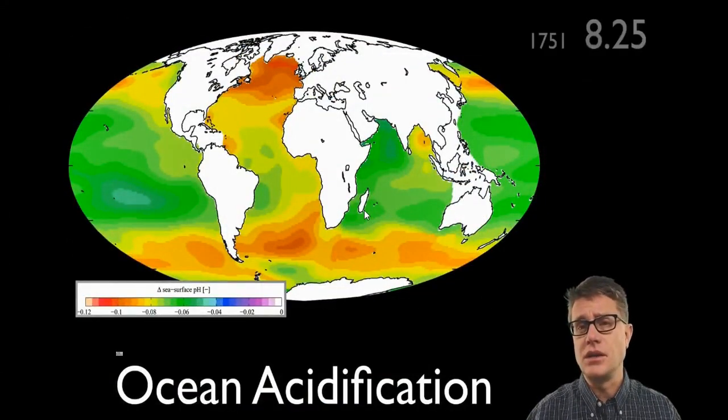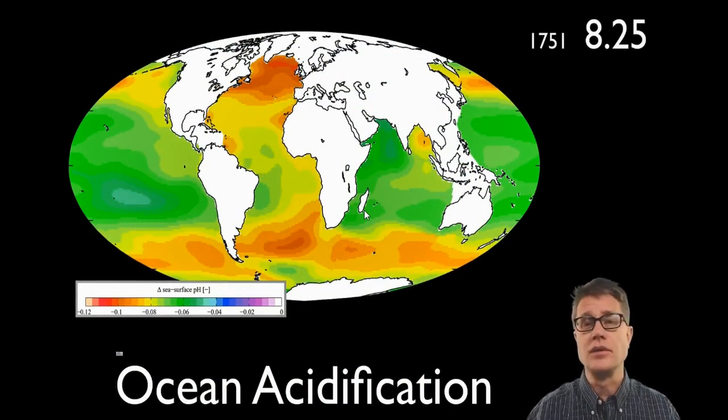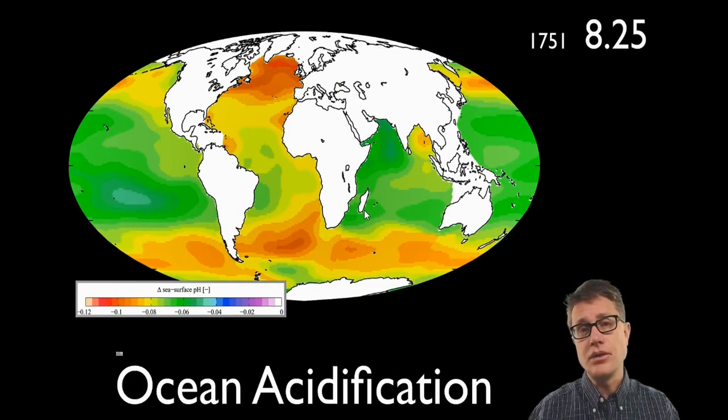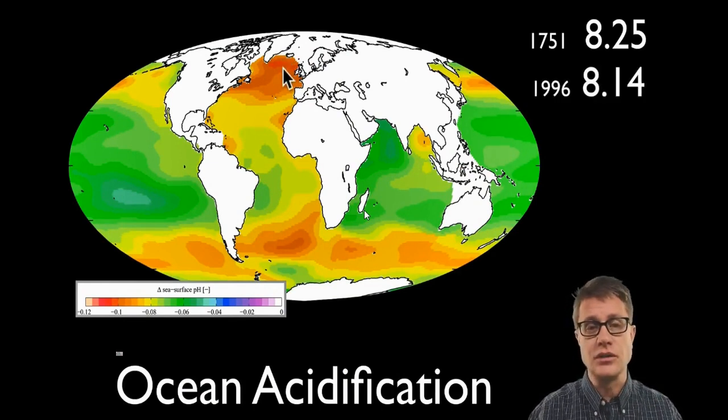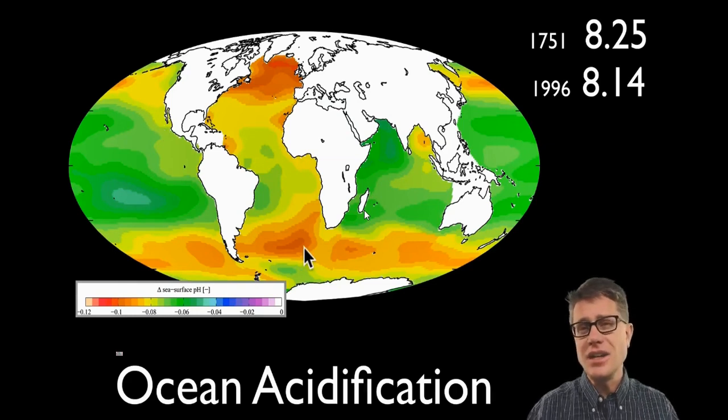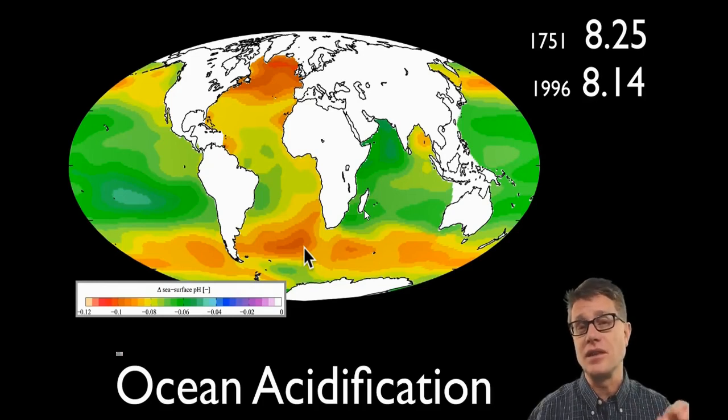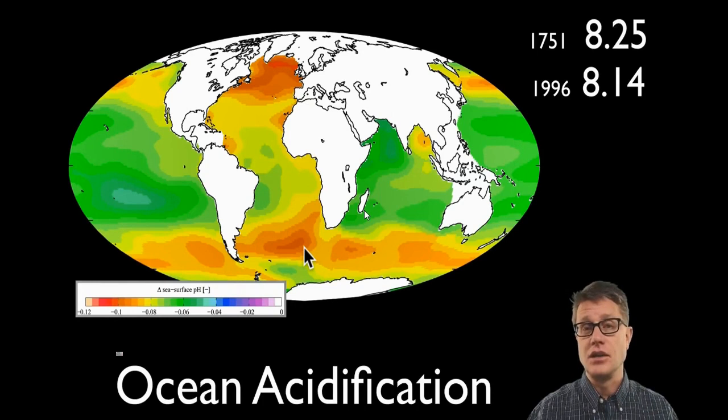Now, how much of a change in pH are we seeing? If we look at pre-industrial levels, the pH of the oceans was really basic, 8.25. Post-industrialization, it had changed to 8.14. Now, there are going to be regional differences you can see on this map right here. And you might say that's not much of a change in pH, 0.11, but remember this is a log scale. So that represents a 30% change in the pH.